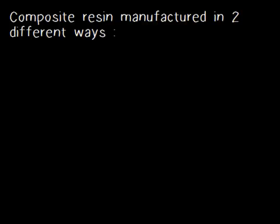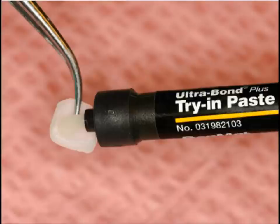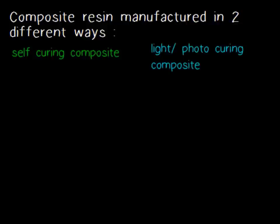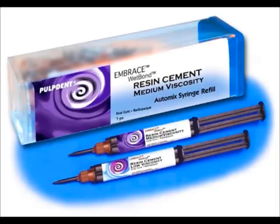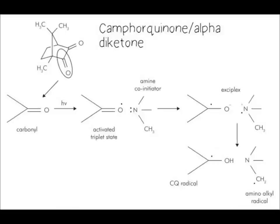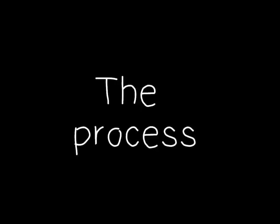Dental composite is manufactured in two different forms: self-curing composite and light-curing or photo-curing composite. Both have a similar mechanism by which dental composite resin is converted to a rigid solid. Self-curing composite is made by mixing two pastes — paste A and paste B. Paste A contains monomers and initiator; paste B contains monomers and co-initiator. Polymerization starts when the two pastes are mixed, generating free radicals as described earlier.